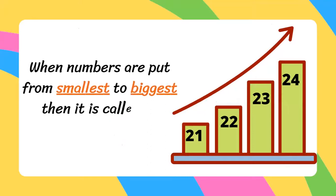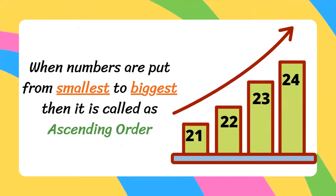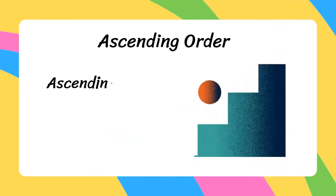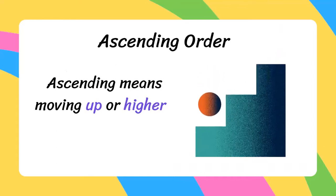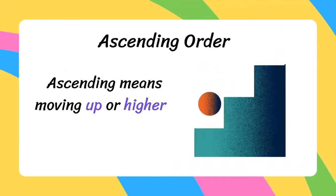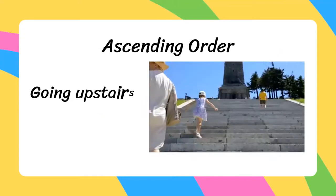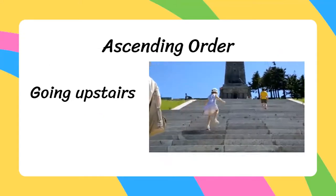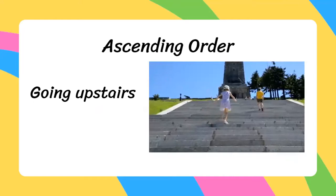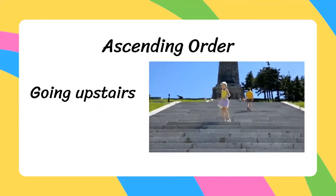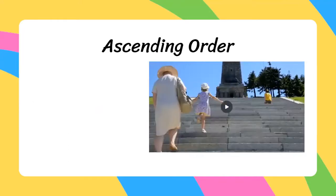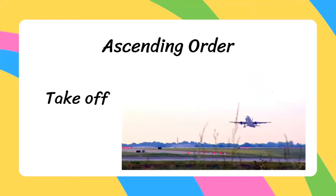When numbers are put from smallest to biggest, it is called ascending order. Ascending order means moving up or higher in position — for example, going up stairs or when a plane takes off.